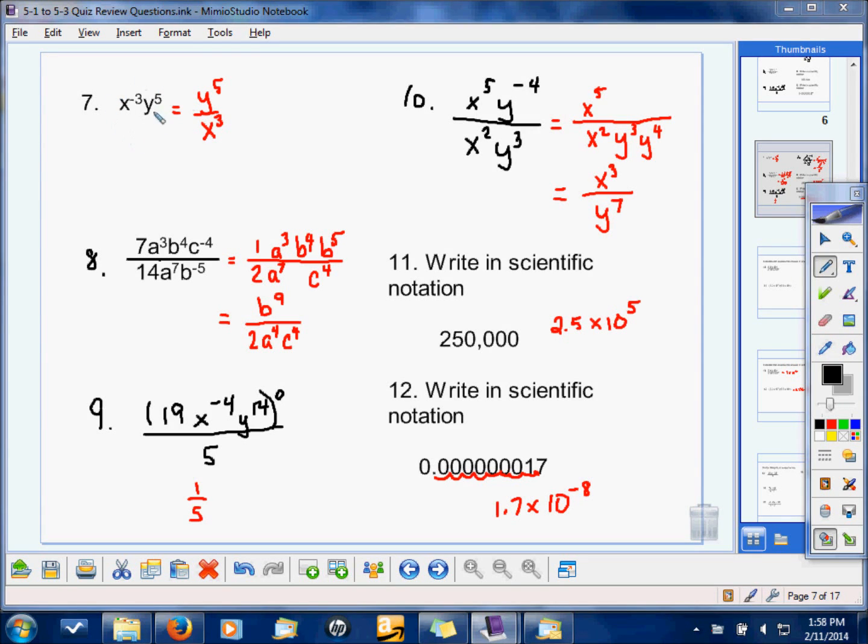For this problem, remember when you have negative exponents, it just means it's where it belongs. And so this negative 3 tells you put it in the bottom. That's where this answer comes from.